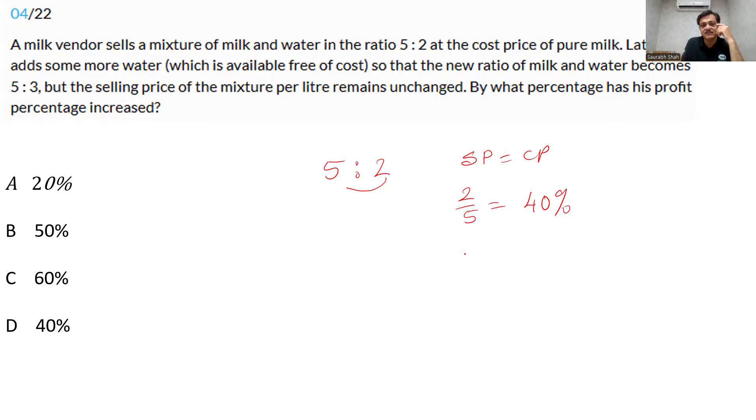After some time, he mixes and the ratio becomes 5 is to 3. So 3 out of 5, the profit percent now becomes 60%. And we are not asked what is the change, percentage change, what is the change in the percent. We are trying to ask what is the percentage change in the percentage profit. We are not asked, this is not the percent point question. 40, 60, 20%. No, 20% is there in the option, but that's wrong.